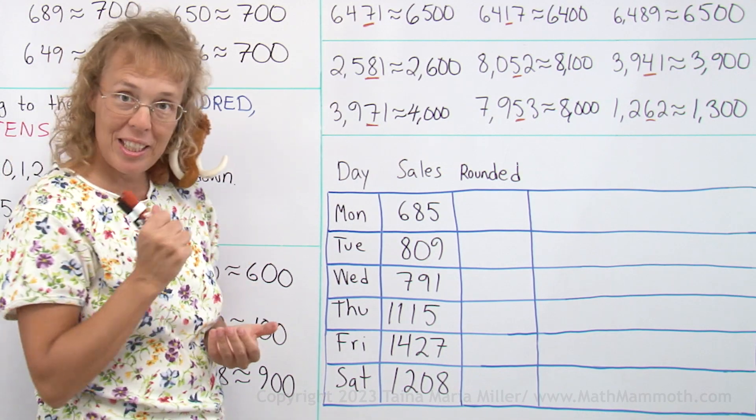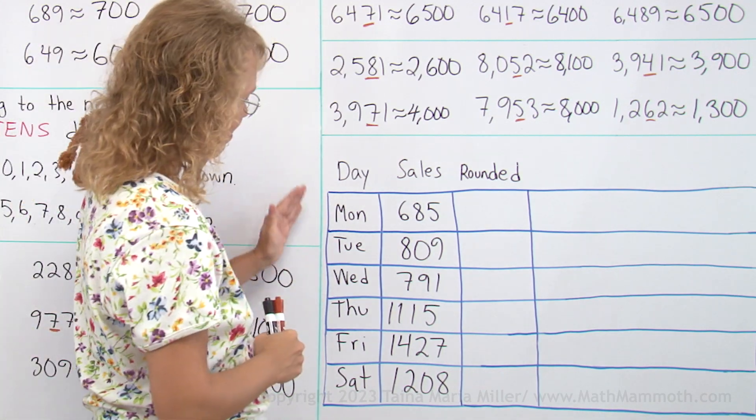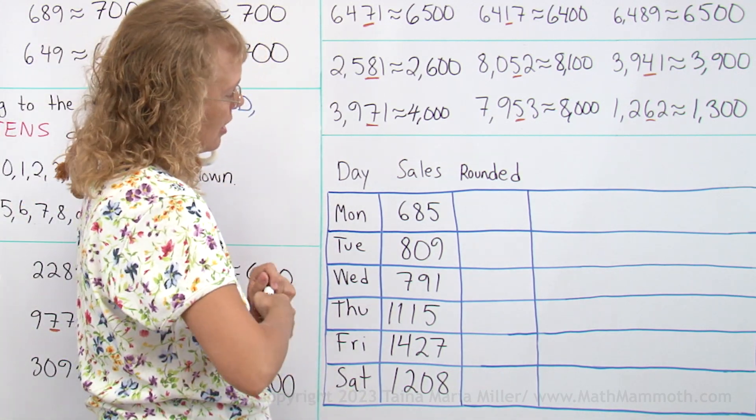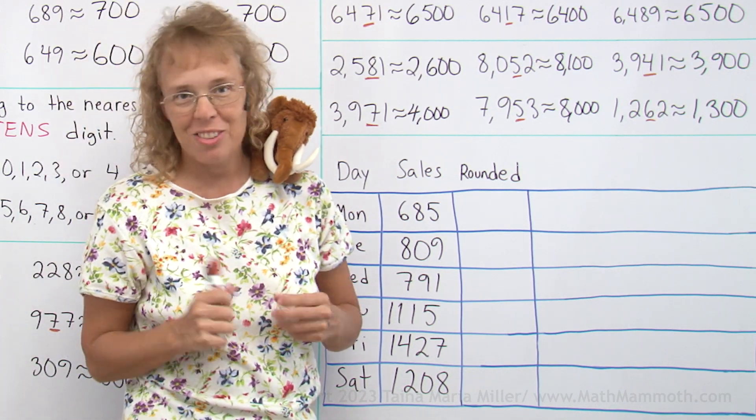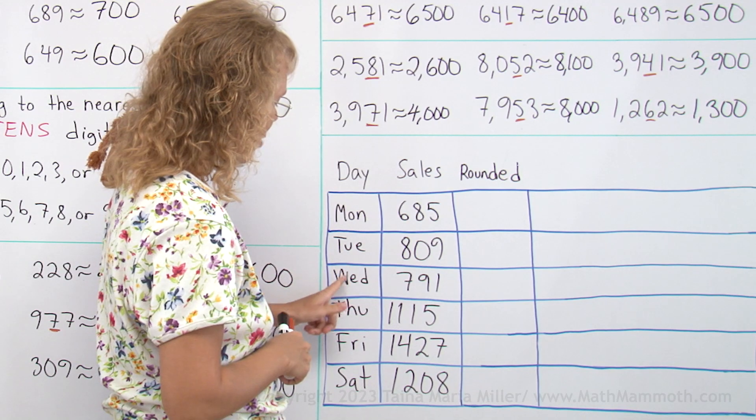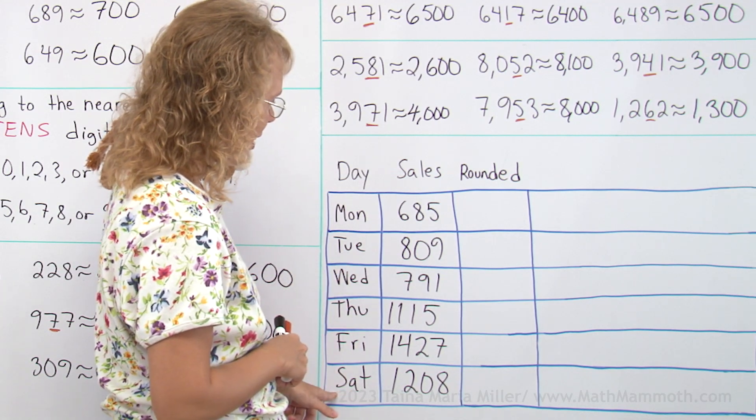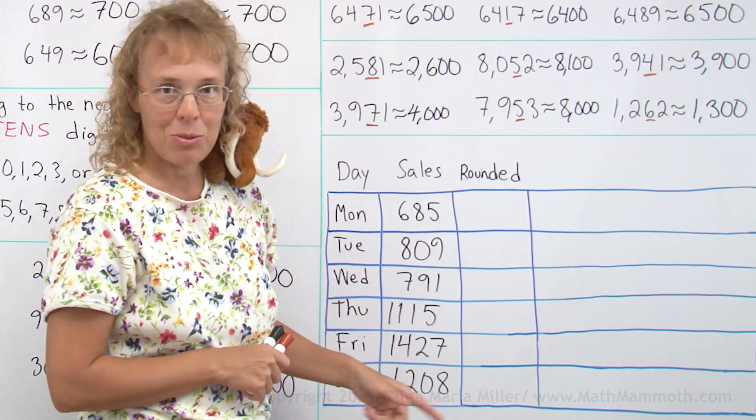We have here a pictograph to make. The chart here gives us the sales for some kind of store, maybe a little grocery store or something. Monday, Tuesday, Wednesday, Thursday, Friday, and Saturday. And this would be dollar amounts, the sales.